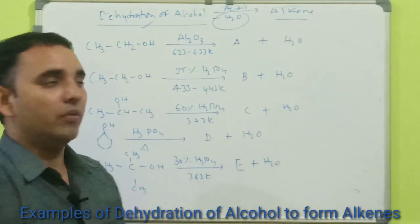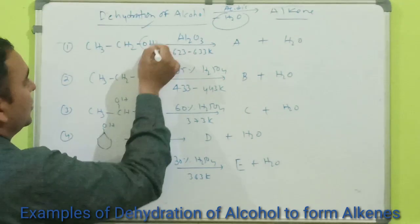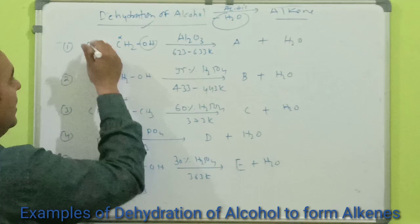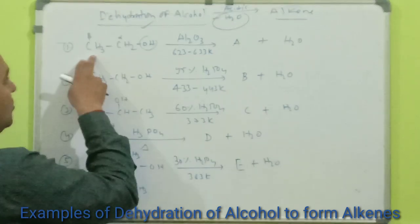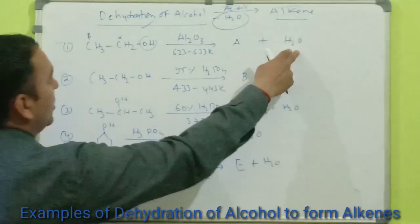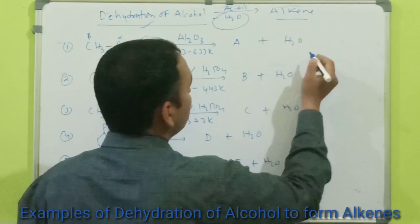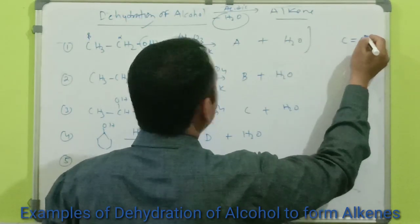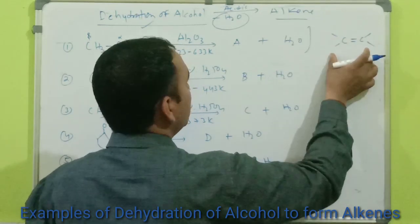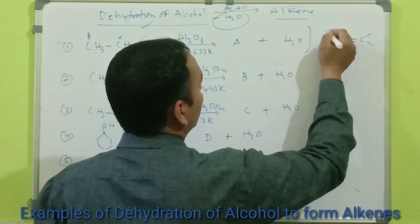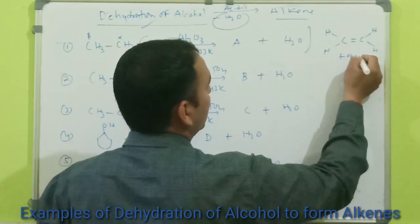In the first case, the OH group is attached to the alpha carbon, and next to it is the beta carbon. The OH group is removed from the alpha carbon and hydrogen from the beta carbon as a water molecule. So between these two carbons, alkene formation takes place — the product is ethene (CH₂=CH₂).